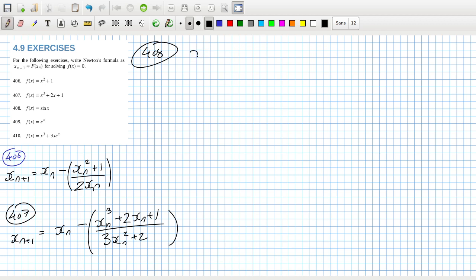408: xn plus one equals xn minus sine xn over cos xn, which could be tan. 409: xn plus one equals xn minus, interesting, minus 1 because it's going to be e to the xn over e to the xn, it's actually one.